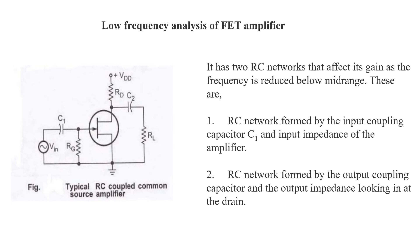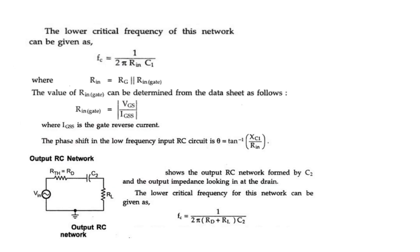Analysis of FET amplifier. It has two RC networks that affect its gain as the frequency is reduced below mid-range. These are: (1) the RC network formed by the input coupling capacitor C1 and input impedance of the amplifier, and (2) the RC network formed by the output coupling capacitor and the output impedance looking in at the drain. The lower critical frequency of the input network is fc = 1 / (2π × Rn × C1), where Rn = RG ∥ Rin(gate), and Rin(gate) = VGS / IGSS, where IGSS is the gate reverse current. The phase shift is θ = tan⁻¹(Xc1 / Rn). The lower critical frequency of the output network is fc = 1 / (2π × (RD + Rn) × C2).